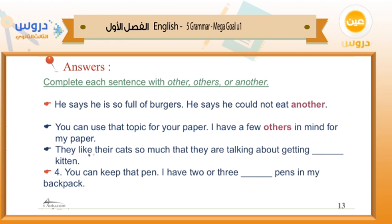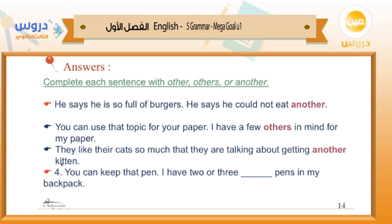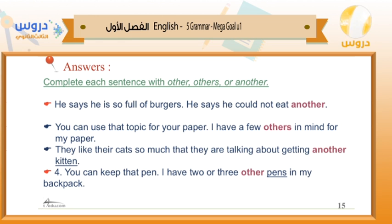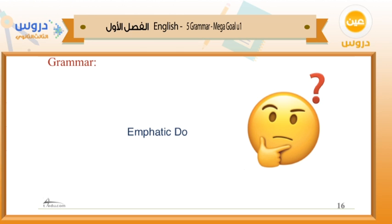Number three: 'They like their cat so much that they are talking about getting ___ kitten.' Since 'kitten' is singular, the answer is 'another kitten' — an adjective added before a singular noun. Number four: 'You can keep that pen — I have two or three ___ in my backpack.' Since 'pins' is plural, we use 'other' as an adjective before the plural noun. Is that clear?